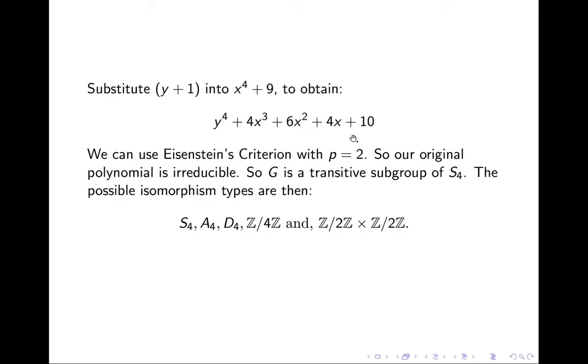We can use Eisenstein's criterion with p = 2, because 2 divides this, but 2 squared does not divide 10. So because irreducibility is invariant under translation, our original polynomial is also irreducible.